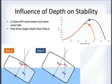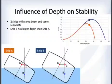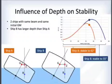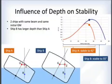Up to a certain angle they behave identically, but then Ship A's deck is about to be immersed, causing its GZ curve to drop off sharply due to the drastically changing underwater volume. Ship B, with its greater depth, maintains a higher GZ curve through that range.